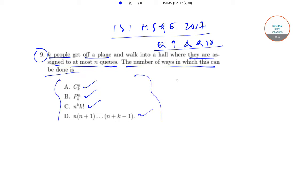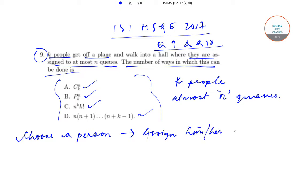We have been given that there are k people and there are at most n queues. The process that will be followed is that we will choose a person and then assign him or her a queue.